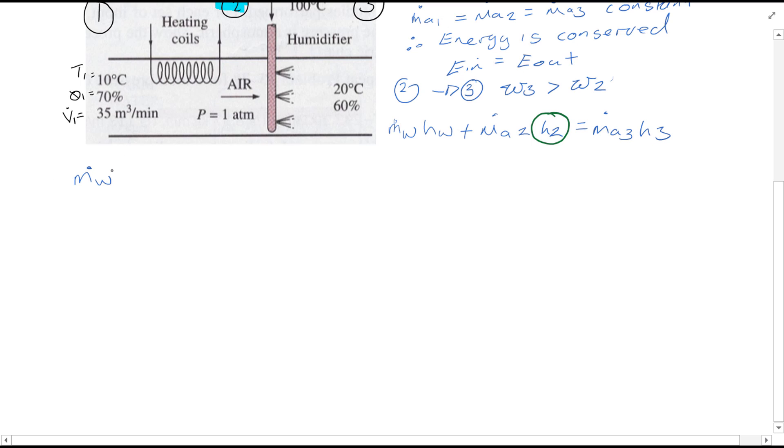Water vapor is equal to mass of the air, omega 3 minus omega 2. Because the saturated vapor added per kilogram dry air is equal to the difference of specific humidity. Hence now if we sub this equation into here, so subbing that into the equation and also bearing in mind that Ma1 is equal to Ma2, which is equal to Ma3.